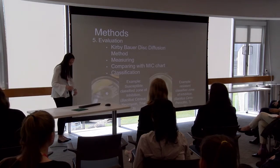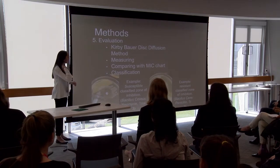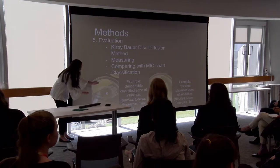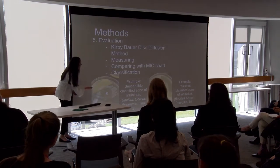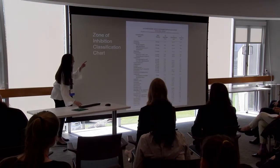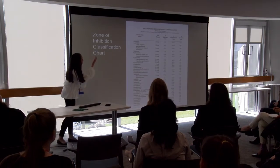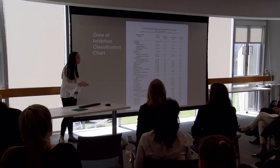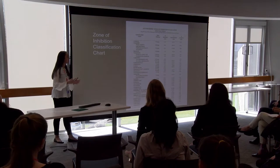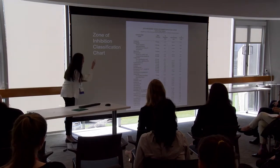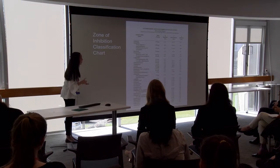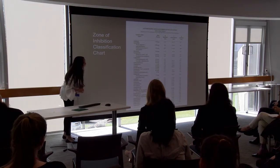Then I did my evaluation using the Kirby-Bauer disk diffusion method. For example, I would take a disc that has a visible zone of inhibition, measure the diameter, and compare it with a chart. I used the same disc potency based on the minimal inhibitory concentration — the least amount of antibiotic needed to kill bacteria — and determined whether each result was resistant, intermediate, or susceptible.